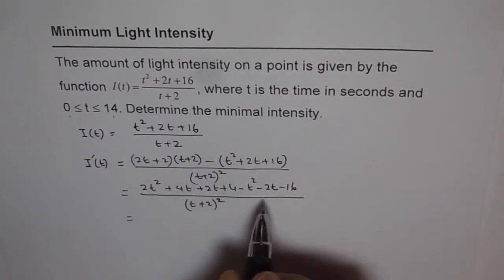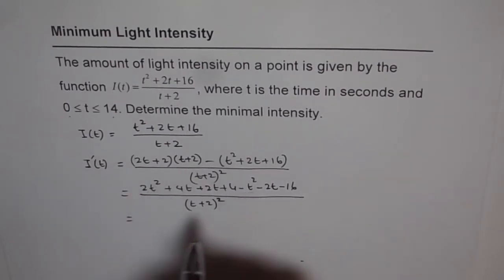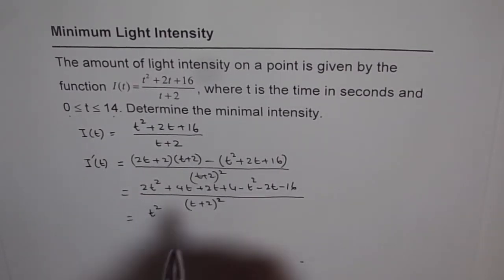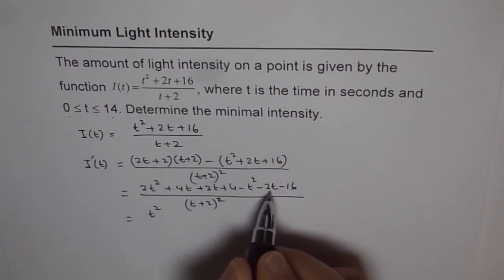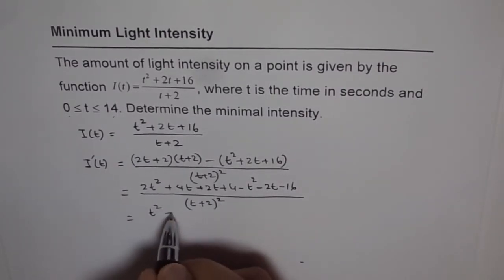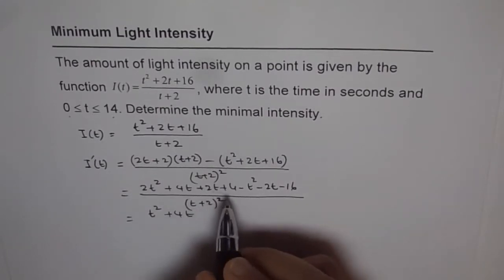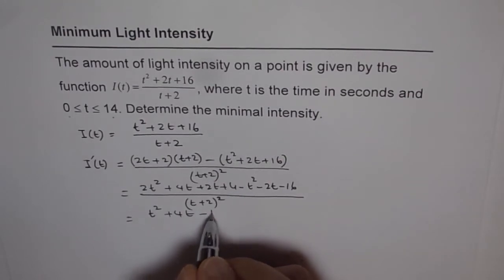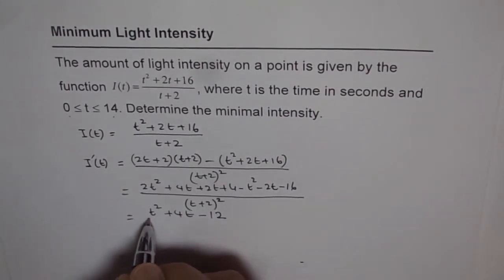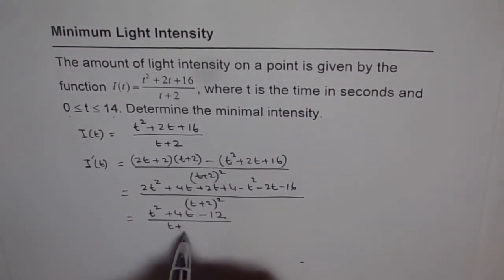Now, when we simplify the numerator, we got 2t² minus t² gives us t² and then 4t plus 2t is 6t and 6t minus 2t is 4t. So we got plus 4t here and as far as constants are concerned, we have got plus 4 and minus 16 which leaves us with minus 12 divided by (t + 2)².